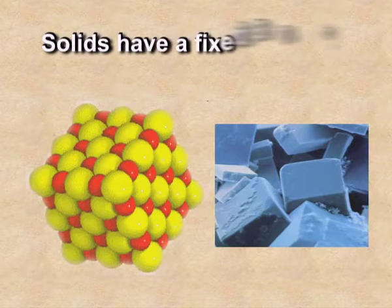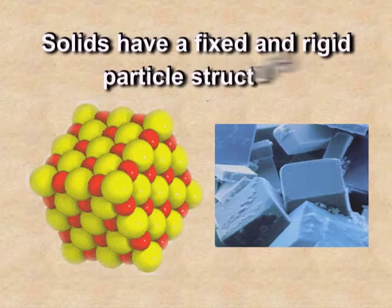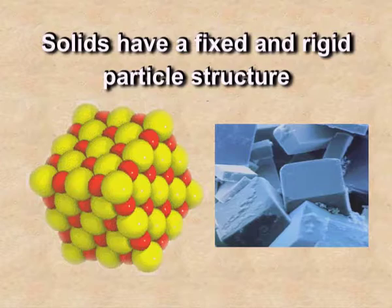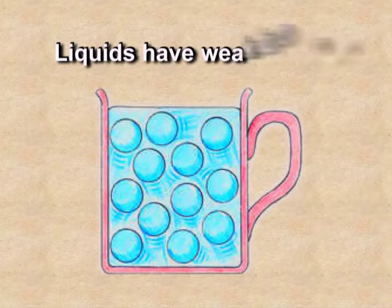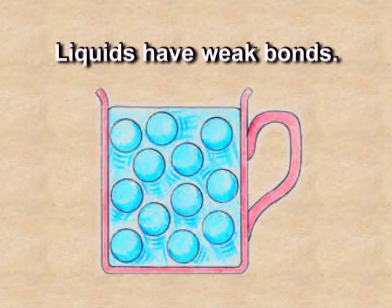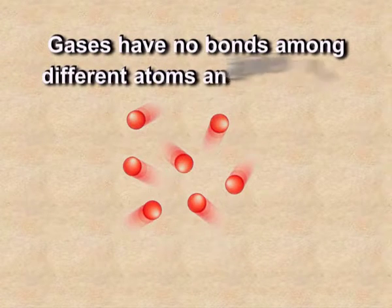Solids have a fixed and rigid particle structure because the constituent particles are very closely packed. Liquids have weak bonds and the molecules are free to move. Gases have no bonds among different atoms and molecules.